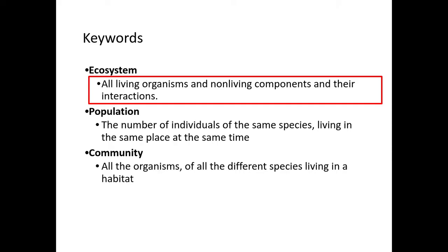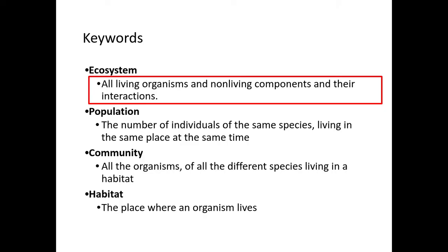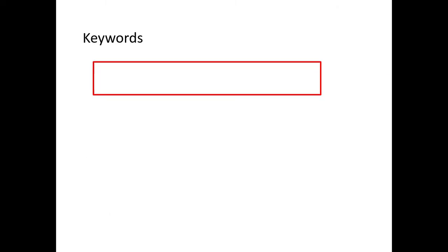For example, in a garden you might have 10 ladybirds, 100 woodlice, 5 worms, and 50 beetles. This is a community — all the organisms of all the different species living in the same habitat. A habitat is a place where the organisms live, so for example that was the garden. The ecosystem definition is in a red box because it's taken from the mark scheme — it's important, we need to learn that.